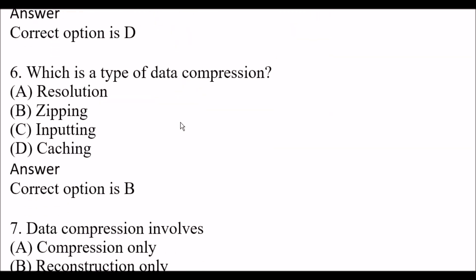Next question: Which of the following is a type of data compression? Option A: resolution. Option B: zipping. Option C: inputting. Option D: caching. The right answer is option B, zipping. Zipping is a type of data compression.